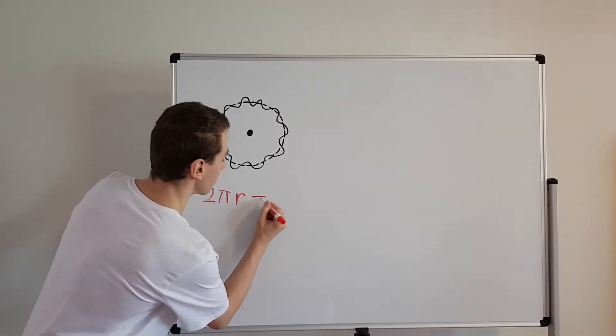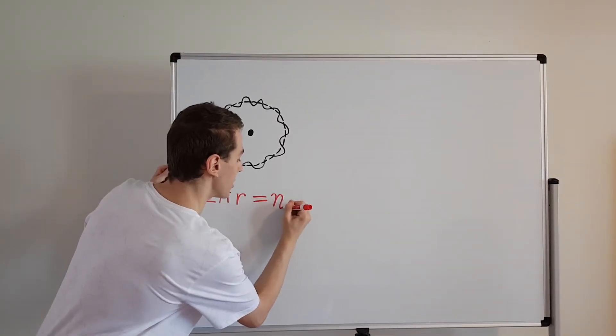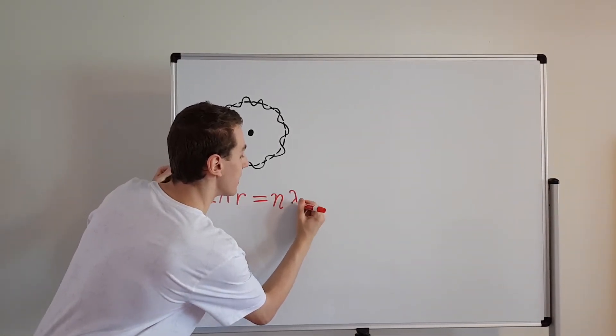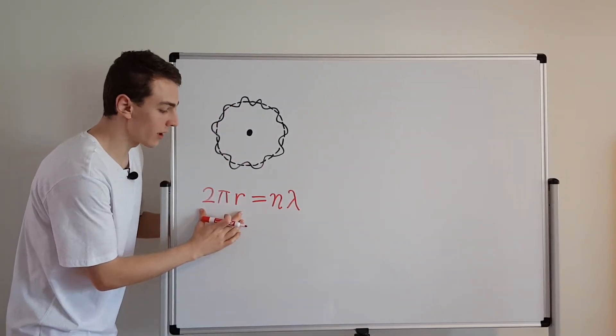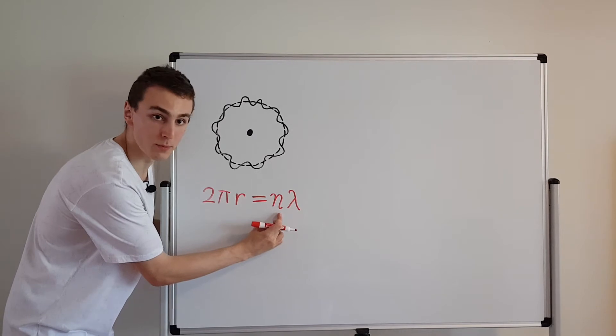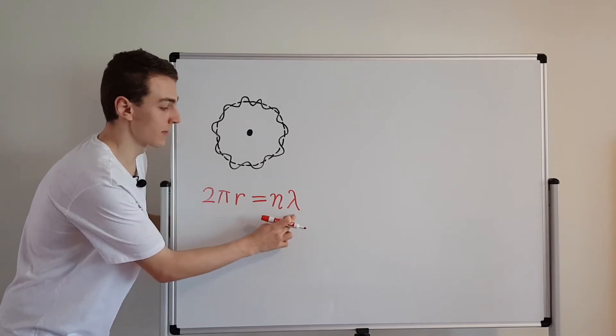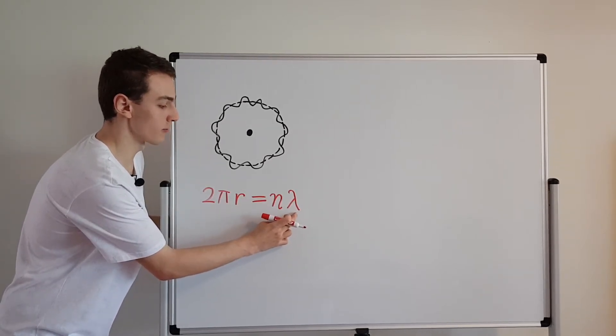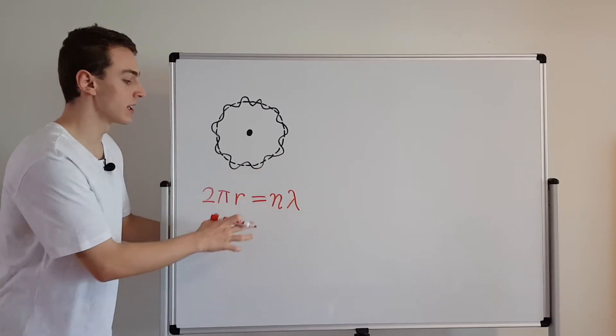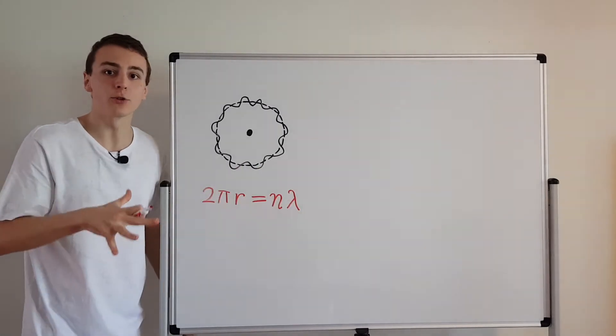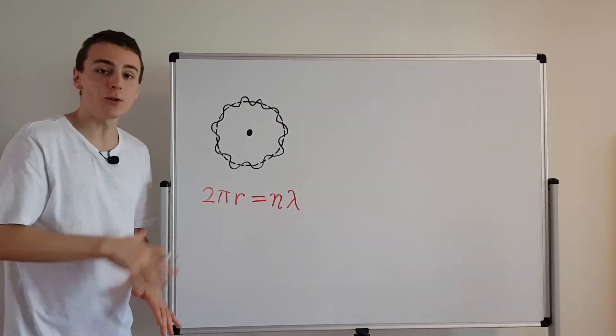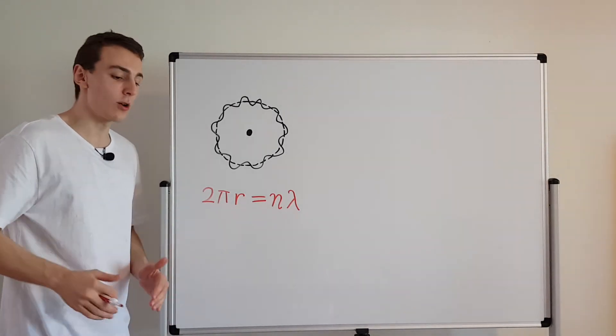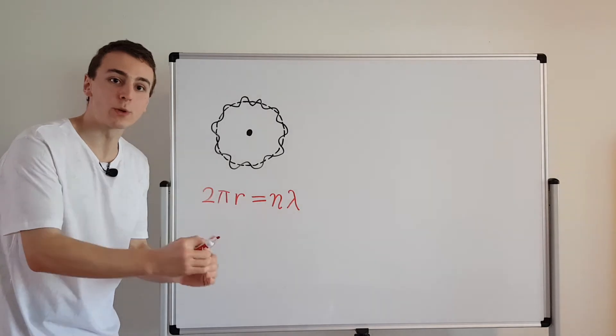So let's write that down. N is some integer and lambda is the wavelength. So the circumference 2 pi r is an integer multiple of the wavelength and lambda is the wavelength of the electron. This is the condition that is going to force angular momentum to be quantized. This is why angular momentum cannot take any value. It can only take on a certain number of discrete values.